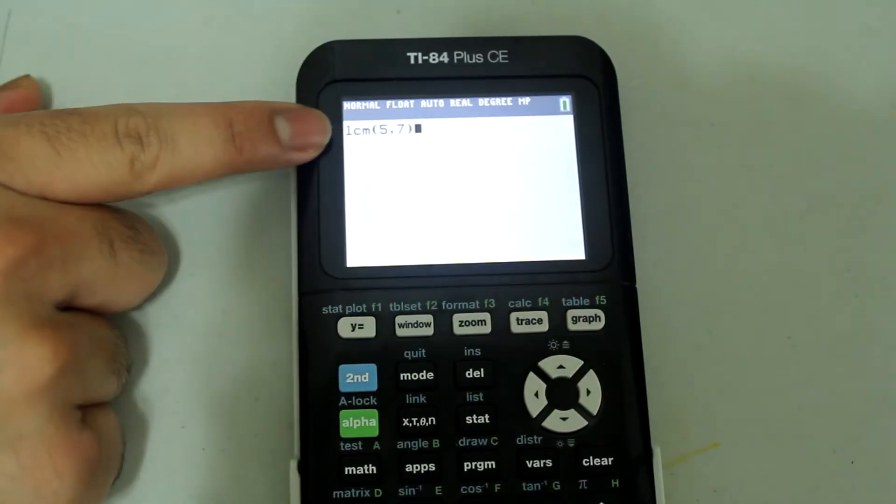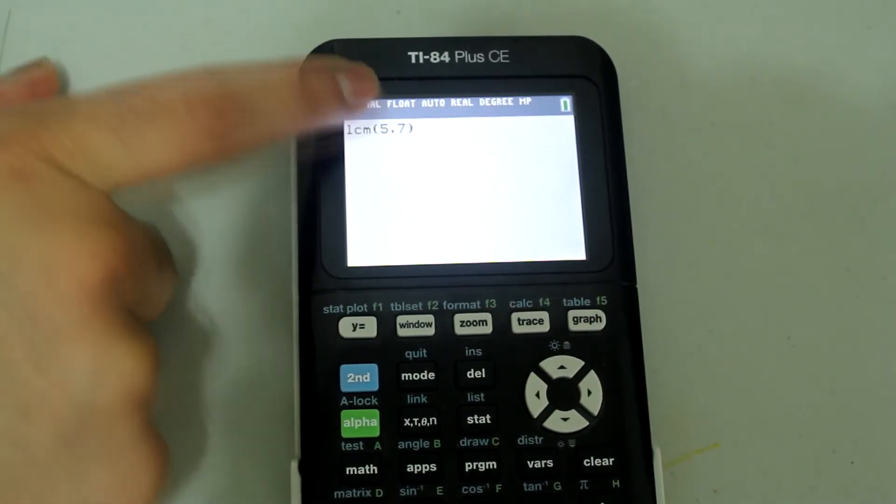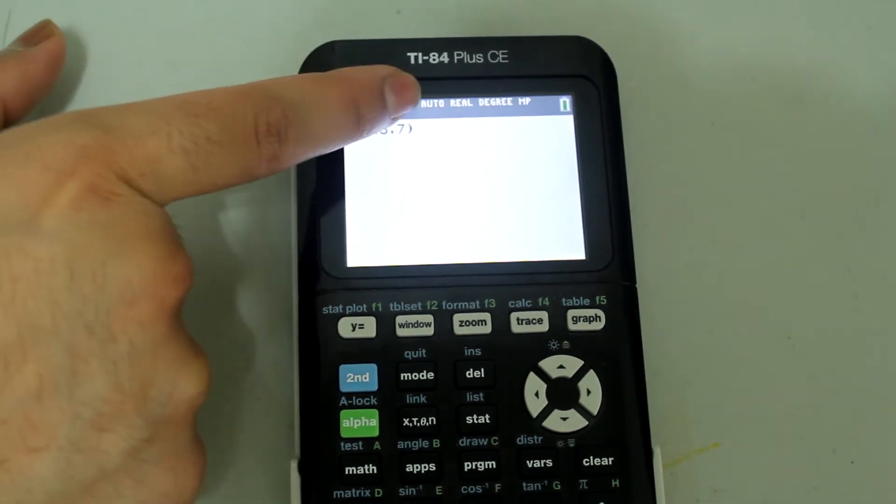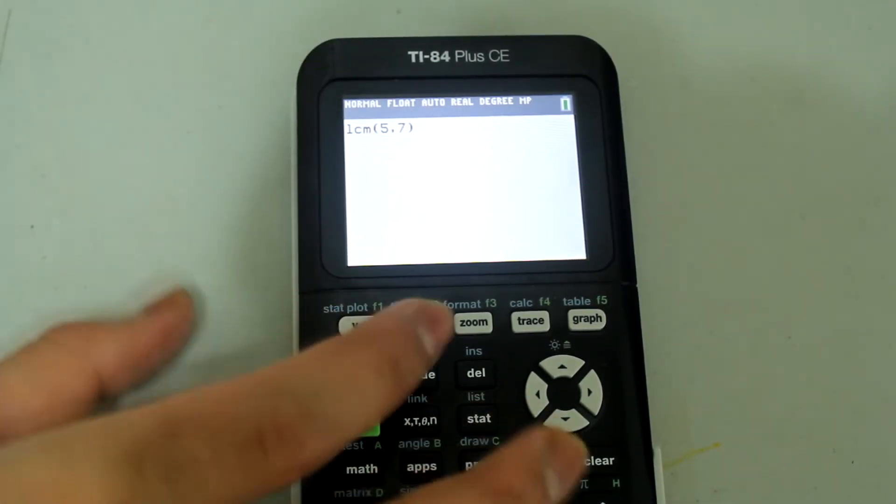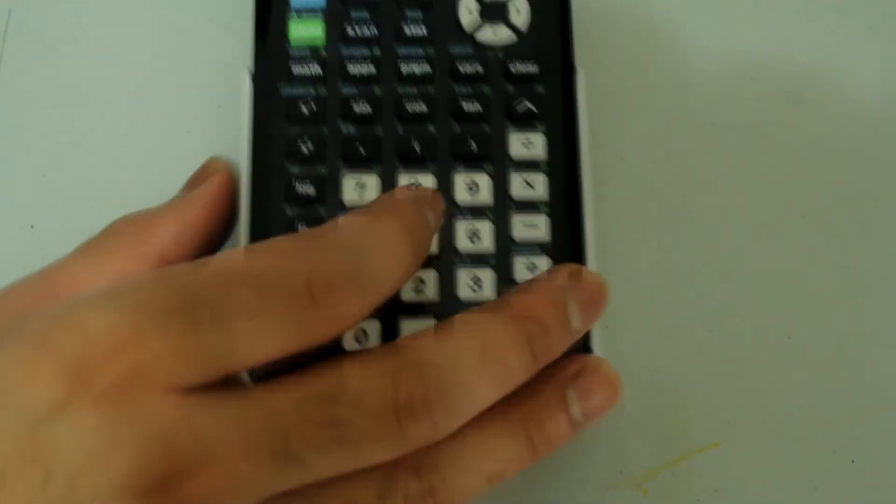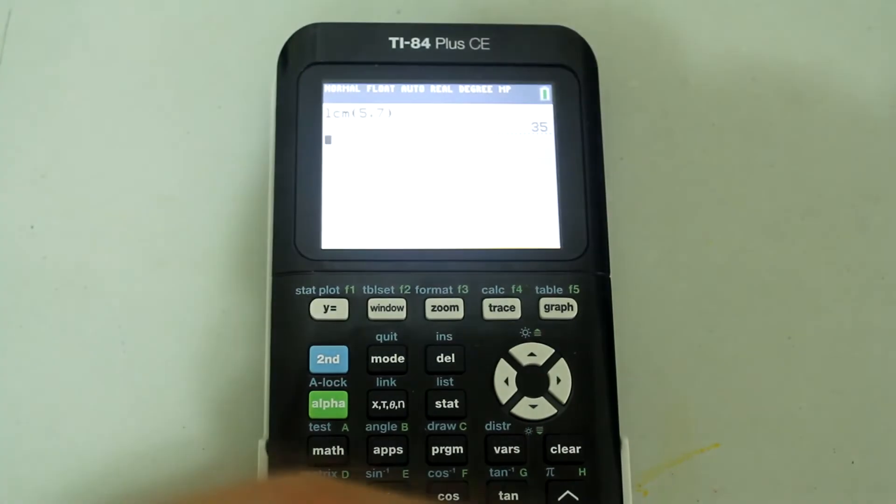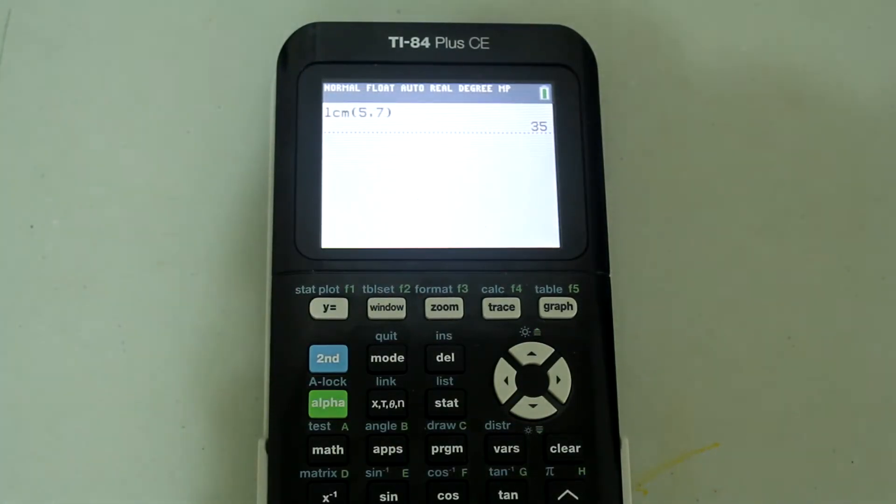I have LCM 5 comma 7 and then the parenthesis is closed. It doesn't matter if I type in the 5 first or the 7, either way I will get the same answer. Now all I need to do is press enter and I get the least common multiple as 35.